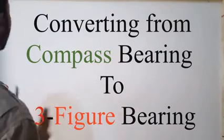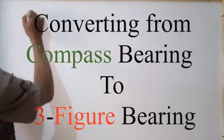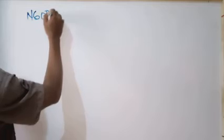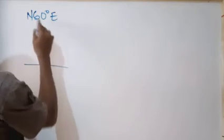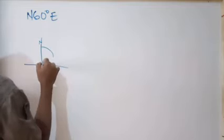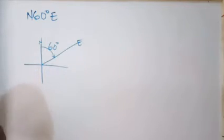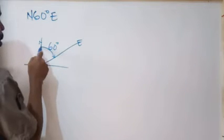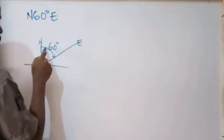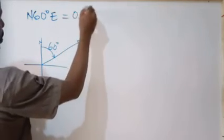Now let's see some conversions. If I have N60°E and I want to represent it as a three-figure bearing, note that in three-figure bearing we always start from the north and move clockwise. N60°E is already moving clockwise from north by 60 degrees, so in three-figure it will simply be 060 degrees.